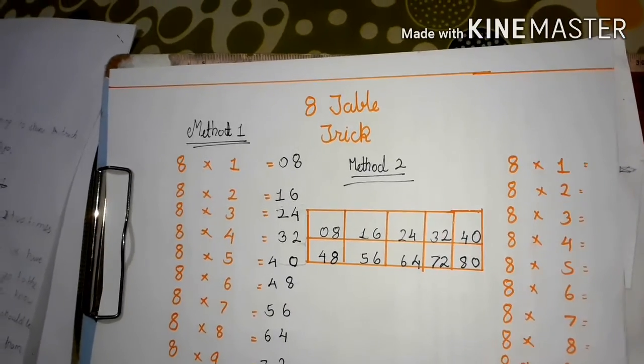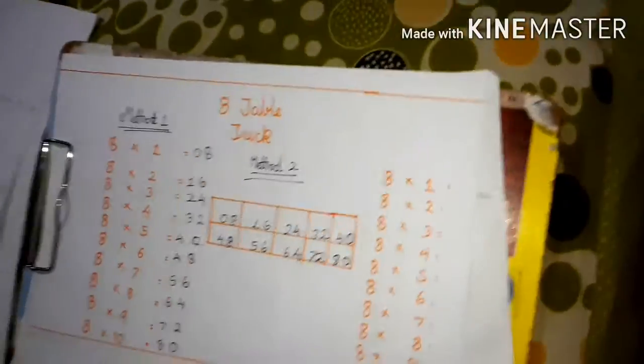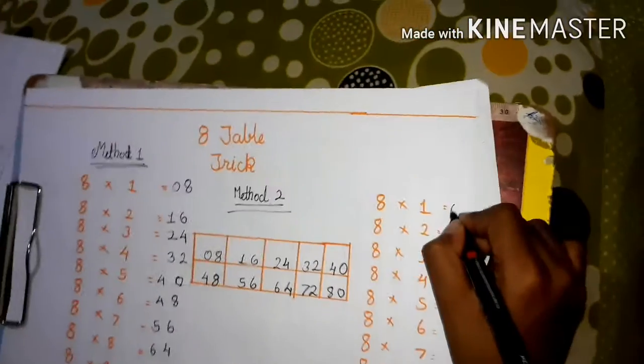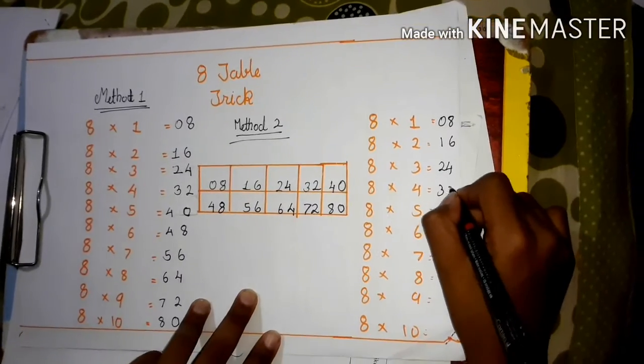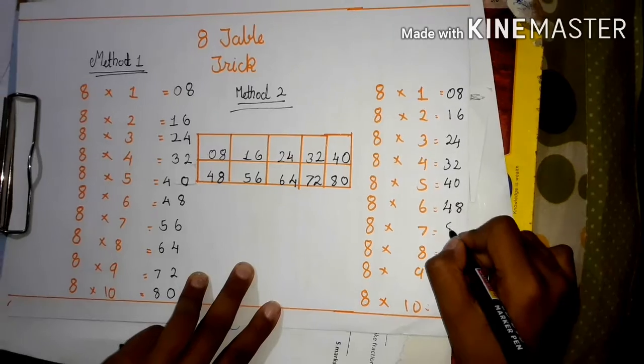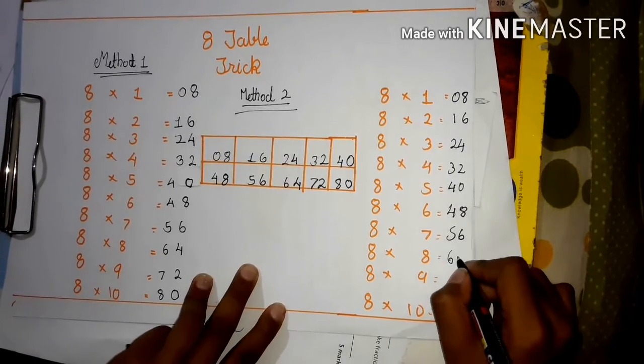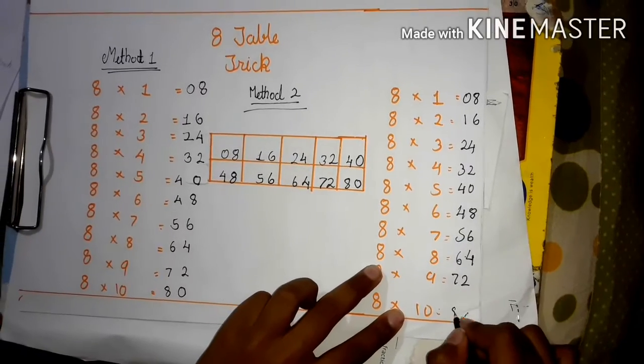So we have got our 8 times table with Method 2. So let's write our 8 times table here: 1, 2, 3, 4, 5, and 8.